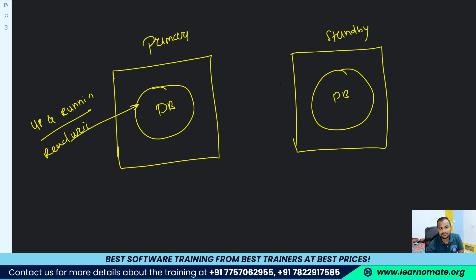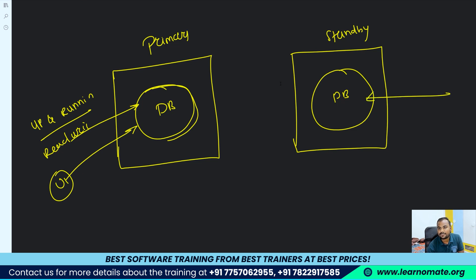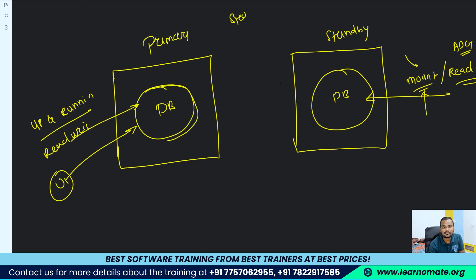In the Data Guard environment, users will get connected from the primary side only — they will not connect to the standby side. So the primary database will be in the up and running, read-write stage. The standby can be in mount stage or in read-only state. Normally with a physical standby database it is in mount stage, but if you use Active Data Guard, you can open the database with the read-only option.